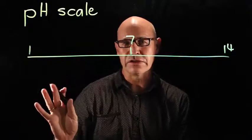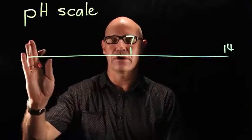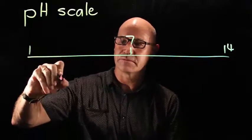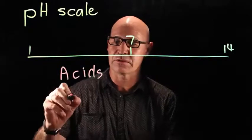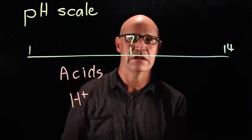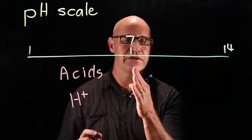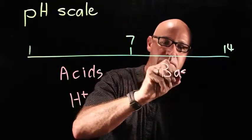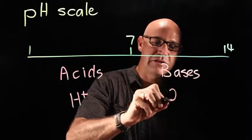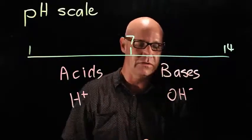Our acids are on the lower end of the scale, below 7. Acids are those substances that release hydrogen ions into solution. Our bases are above 7, and they release OH ions in solution.